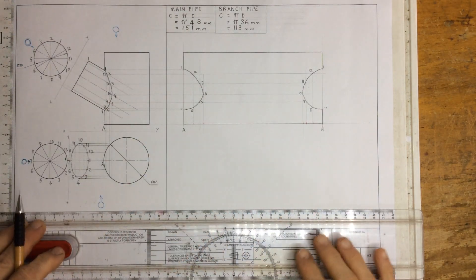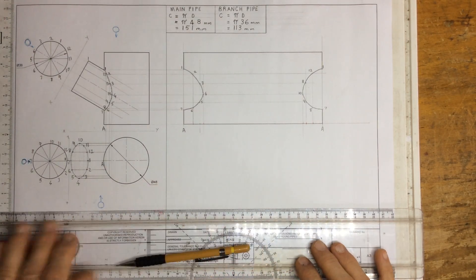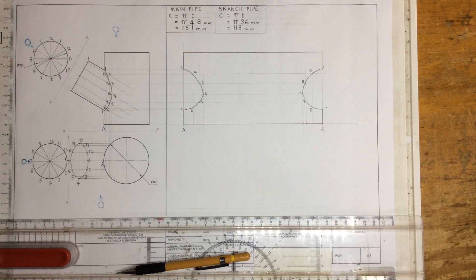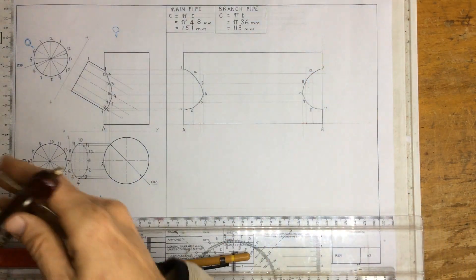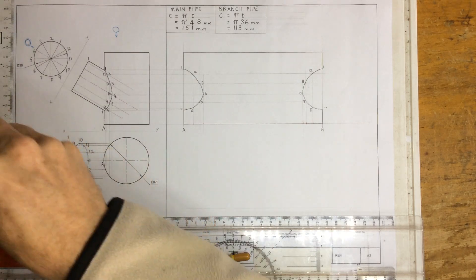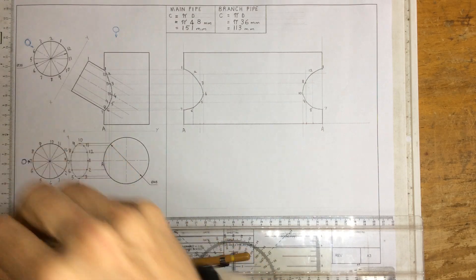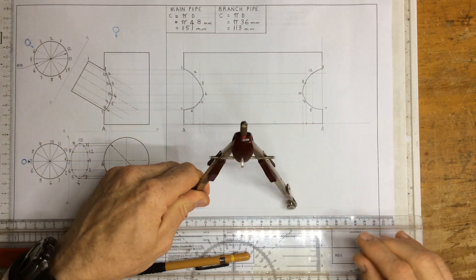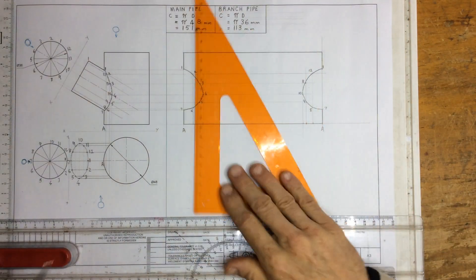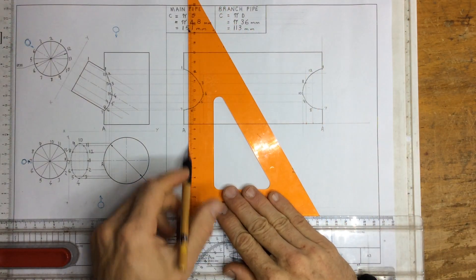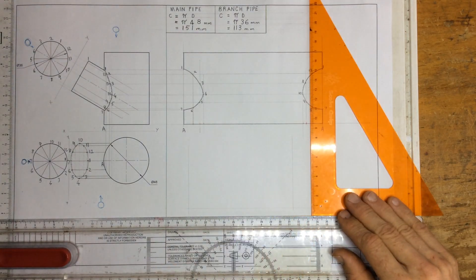Step number one, I'm just going to draw a construction line over here, and I'm going to measure off the circumference on that line. The branch pipe, if I've done my calculation correctly, has a circumference of 113. I measure off 113 and place that on the drawing, and I can draw a construction line coming up over here and a construction line coming up over there.